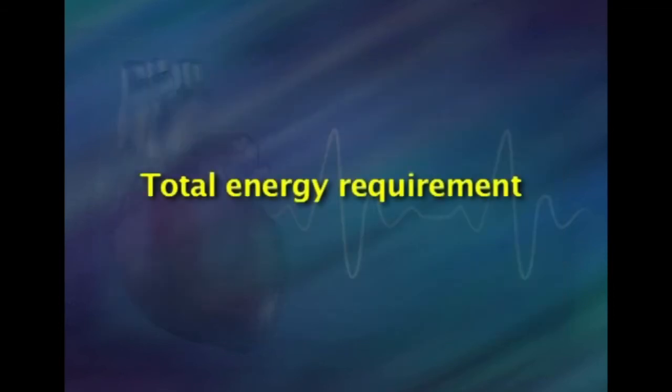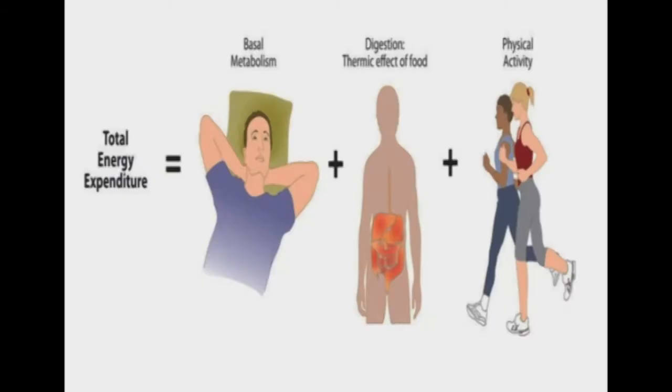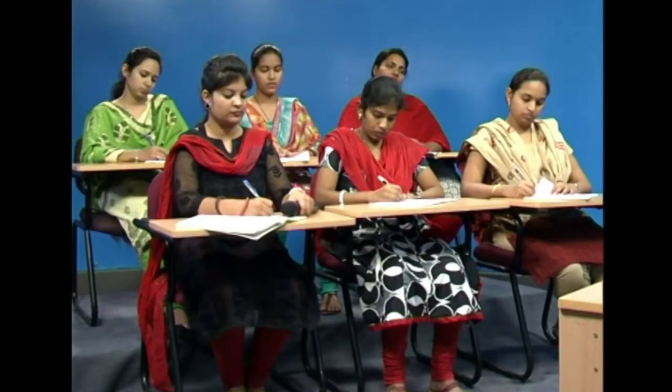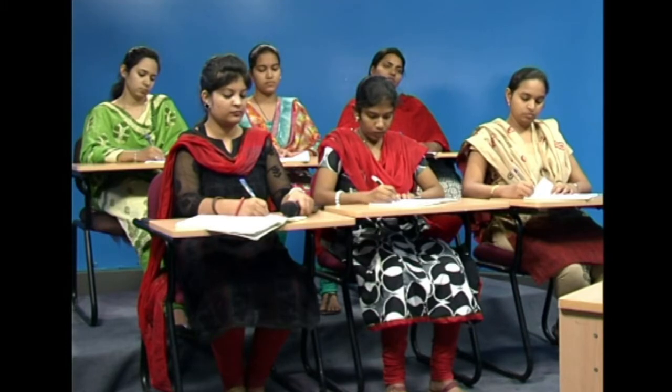The total energy requirement of an individual is the level of energy intake from food that will balance energy expenditure, consistent with long-term good health and maintenance of economically necessary and socially desirable activity. In children, pregnant, and lactating women, the energy requirement includes the energy needs associated with the deposition of tissues or secretion of milk at rates consistent with good health. The human body's total energy needs can be subdivided into three separate categories.